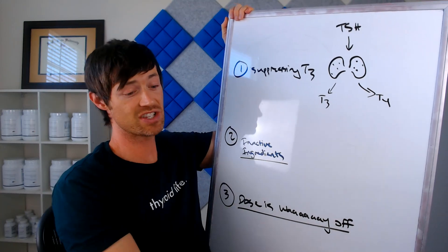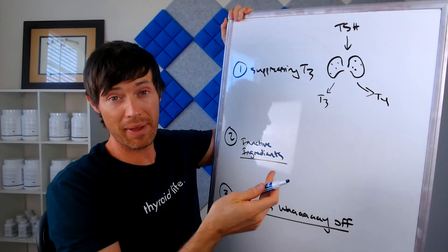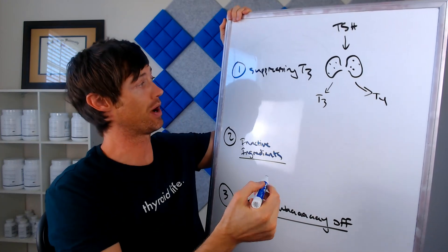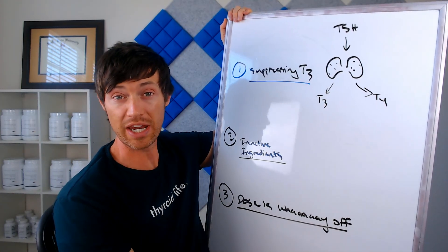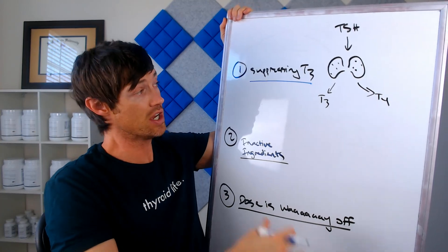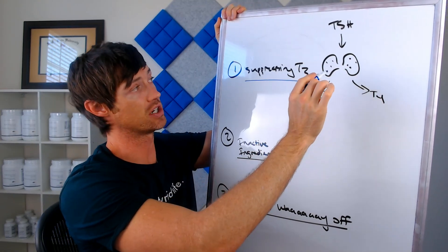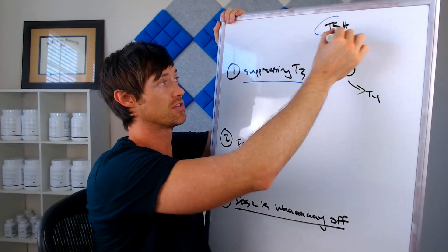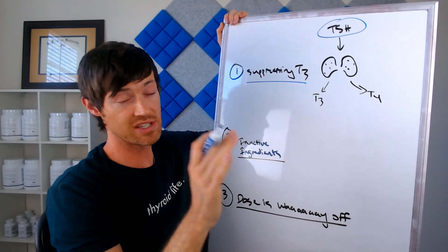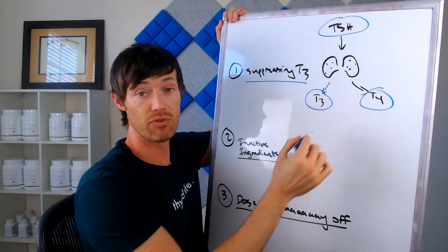The first reason has to do with how thyroid medication impacts the normal thyroid system in your body. And really what this is doing is it may be suppressing the amount of T3 that your body is producing naturally. So to explain this, let me talk about the normal healthy thyroid physiology. So what normally happens in the healthy thyroid is that you have something called TSH, which stands for thyroid stimulating hormone, impacts the thyroid gland to produce both T3 and T4.